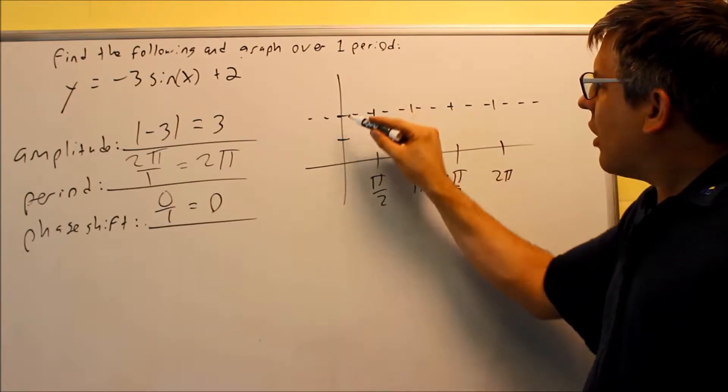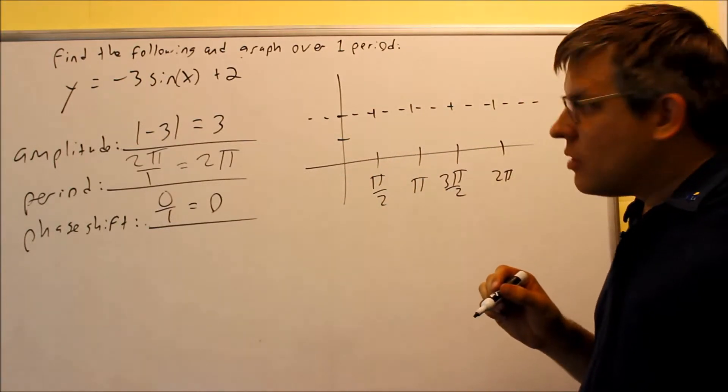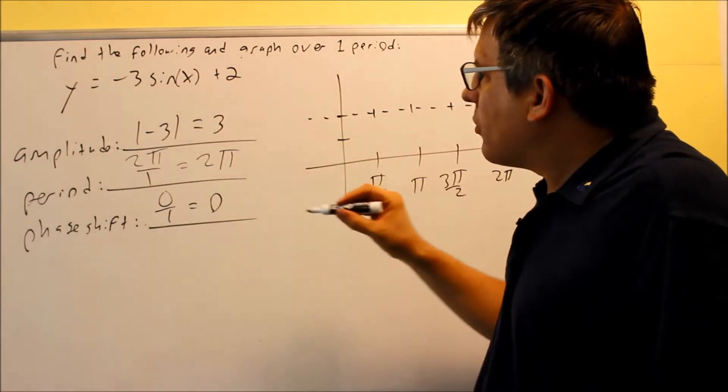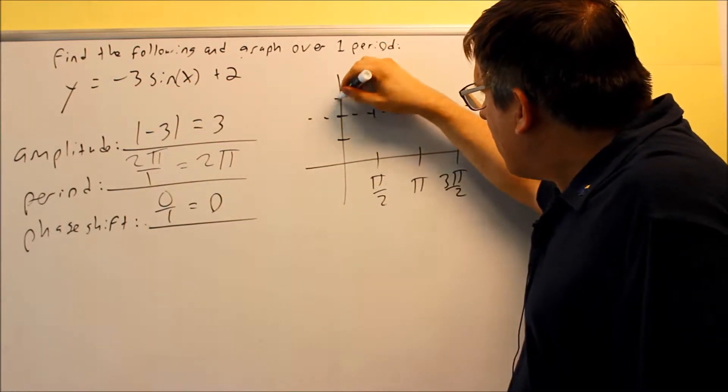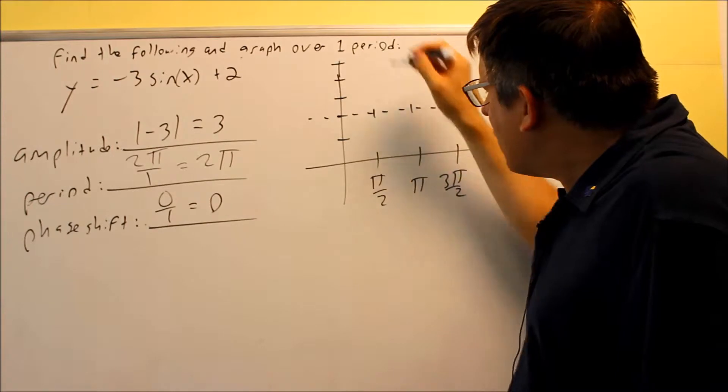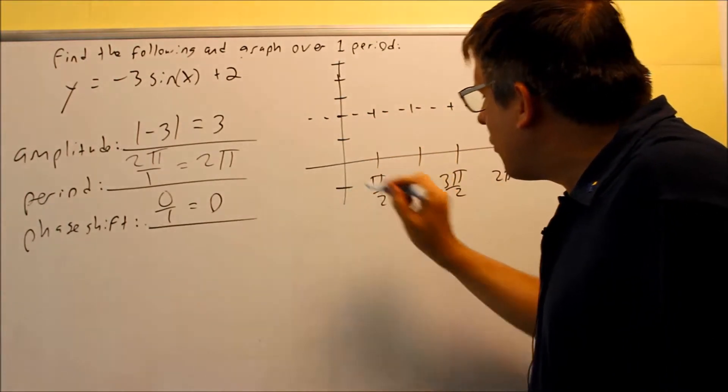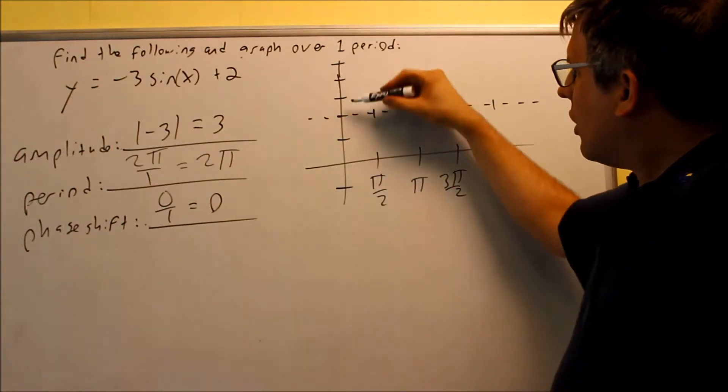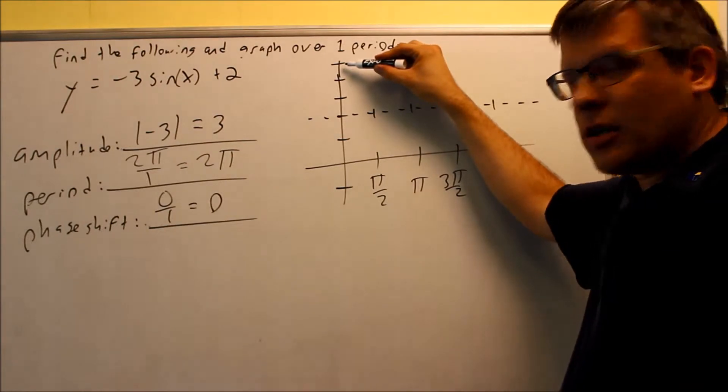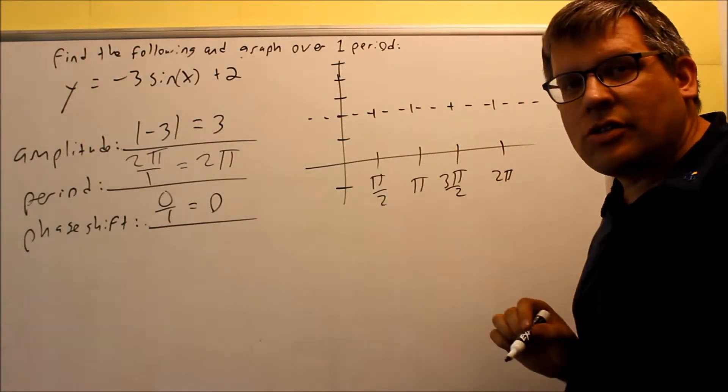I'm going to base everything off this dotted line. My amplitude is 3. From the dotted line, I'll go up 3 to here, and down 3 in this direction. I'm going 3 above the dotted line and 3 below it.